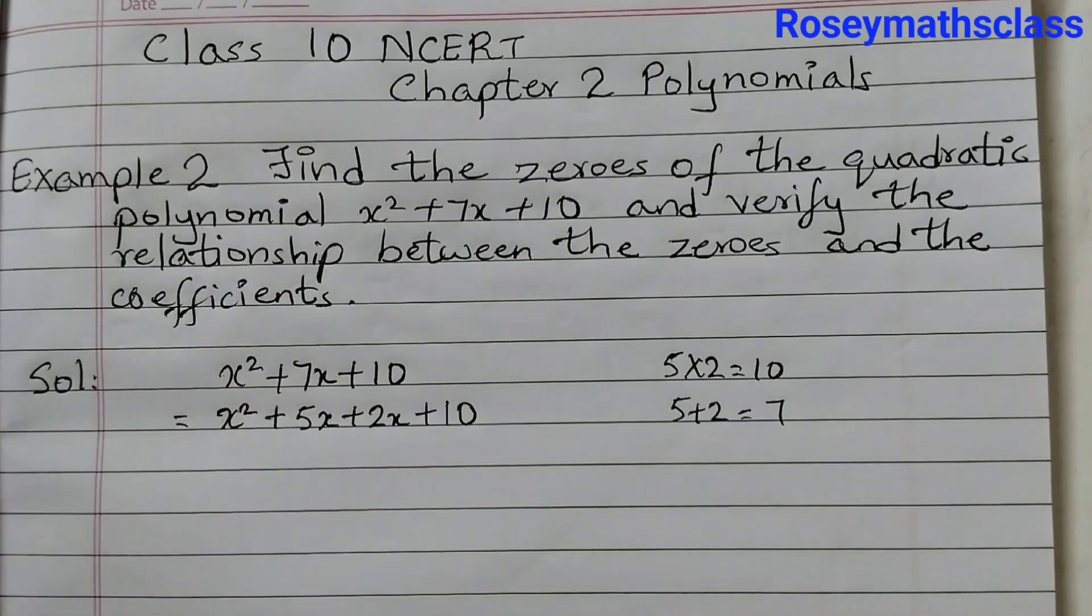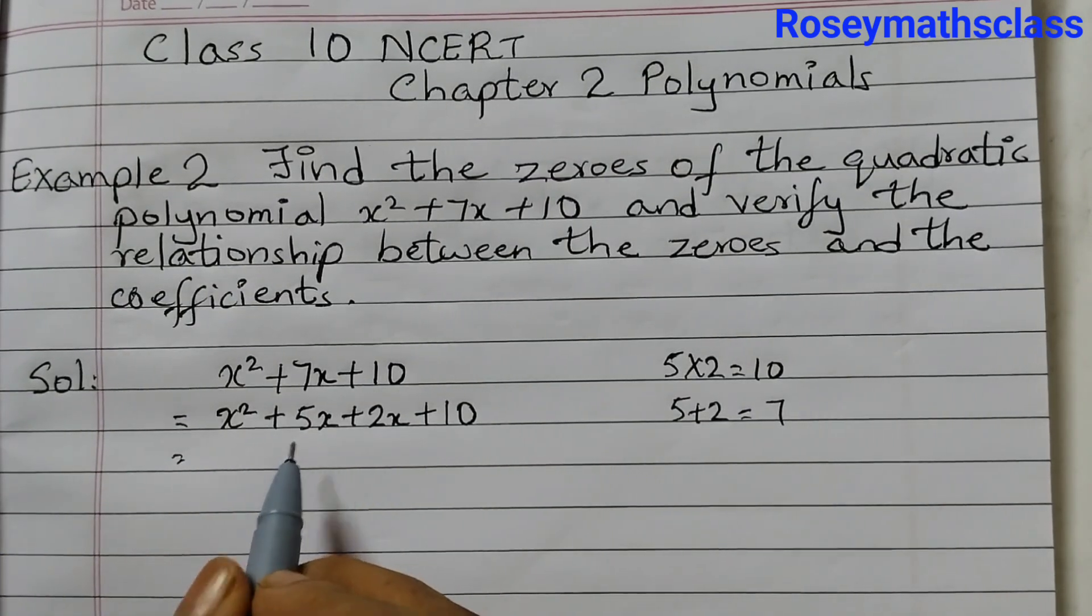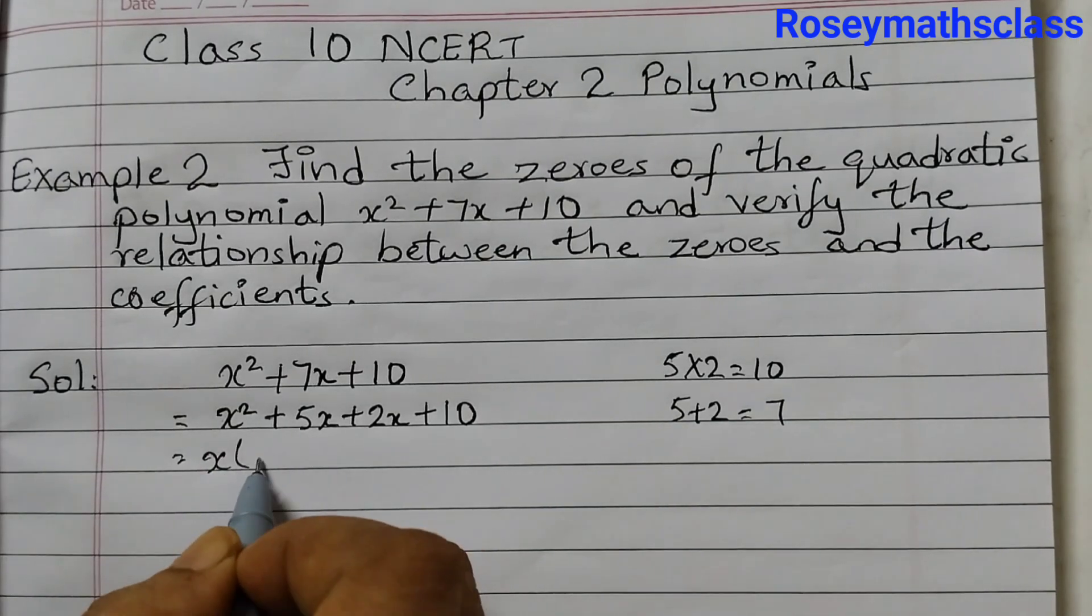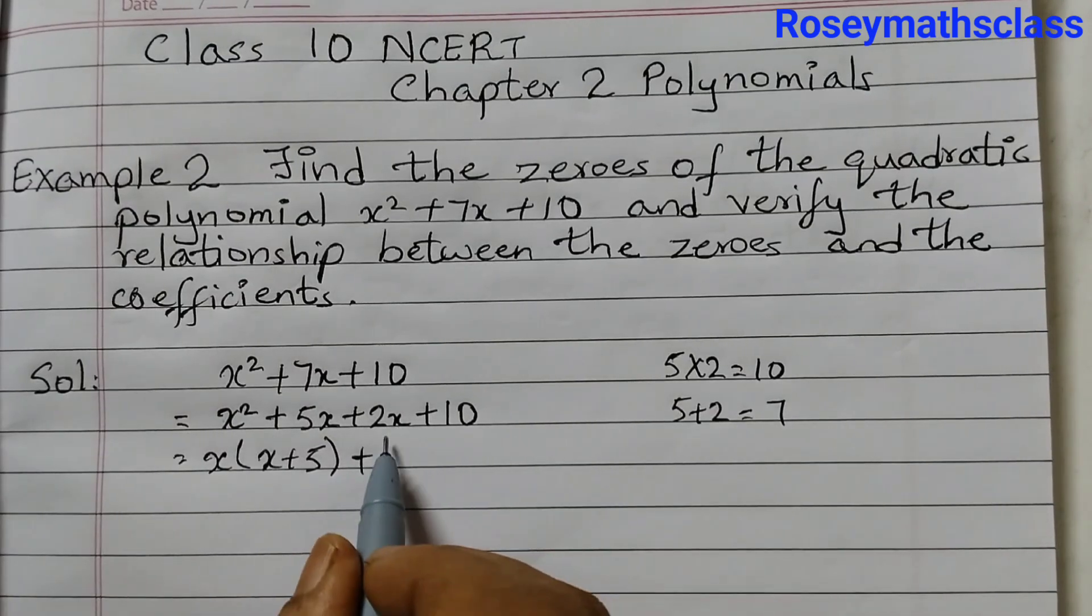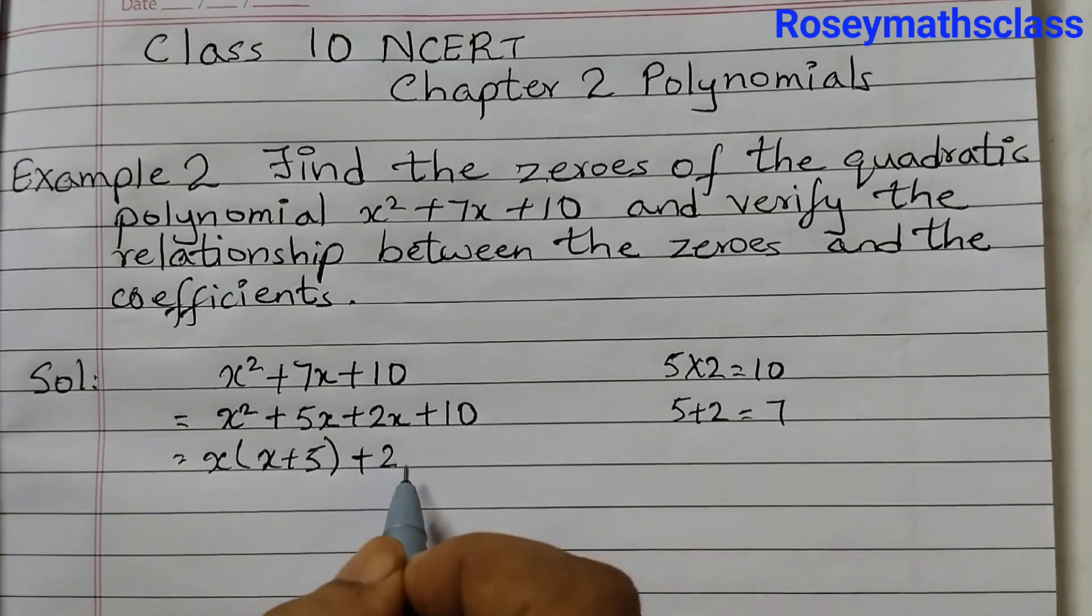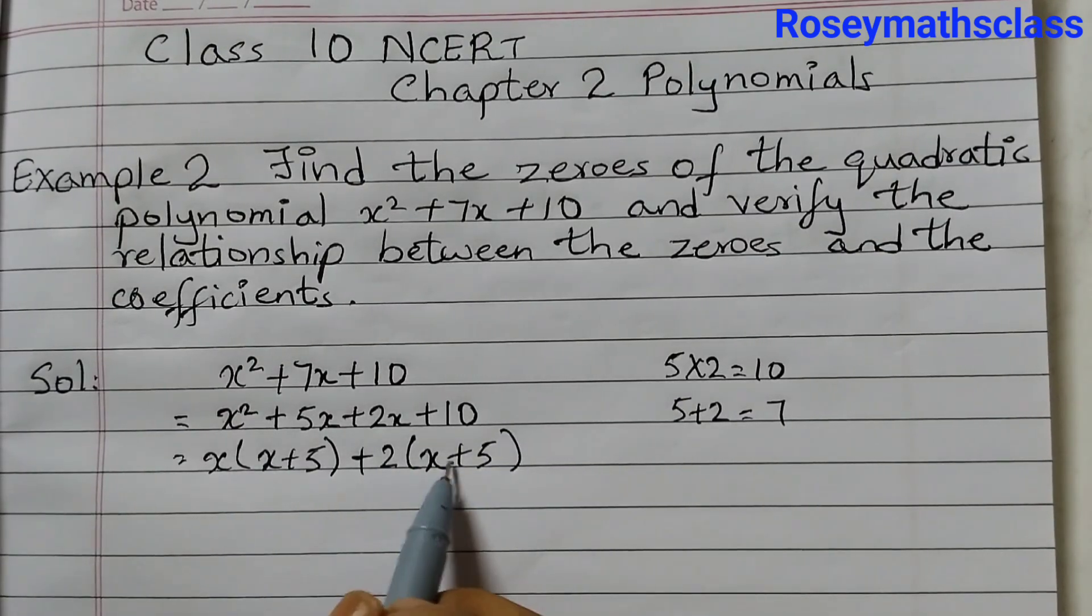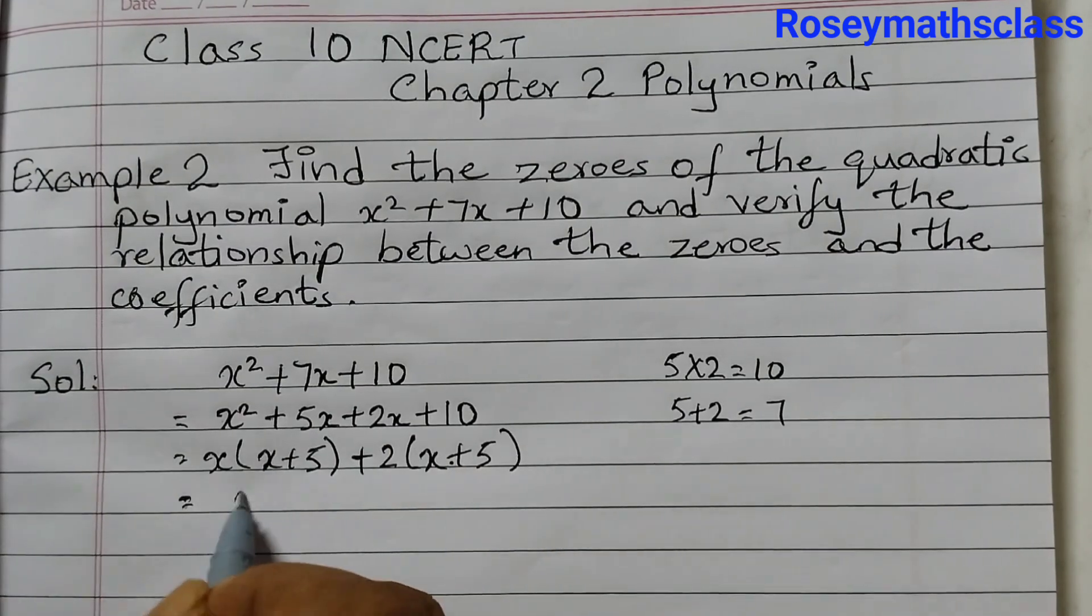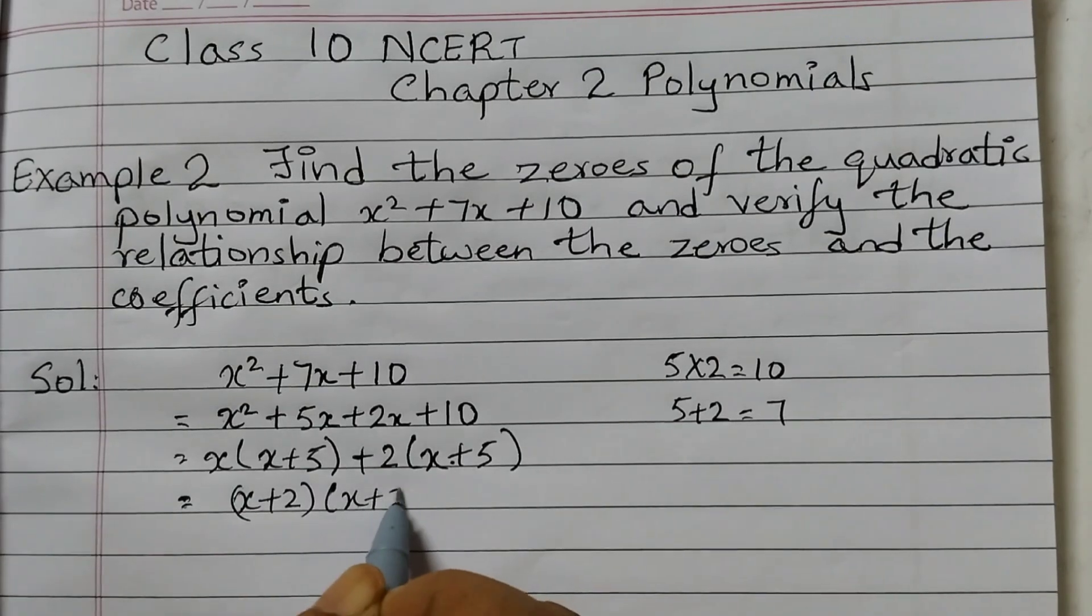This we have learnt in grade 9. Now we will form pairs, take the first two terms and x is common so x comes out x plus 5 plus the last two terms 2x plus 10, 2 is common so 2 out x plus 5. Always these two expressions would be the same, equals to x plus 2 into x plus 5.